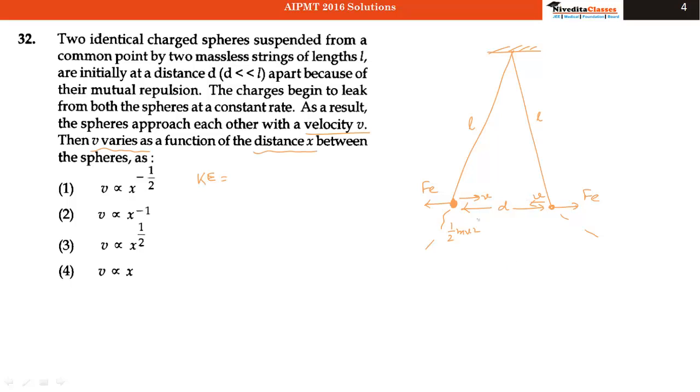When they are moving with velocity V at that time, the distance between these two will be X. So the kinetic energy will be half mv squared plus half mv squared, that is equal to mv squared.